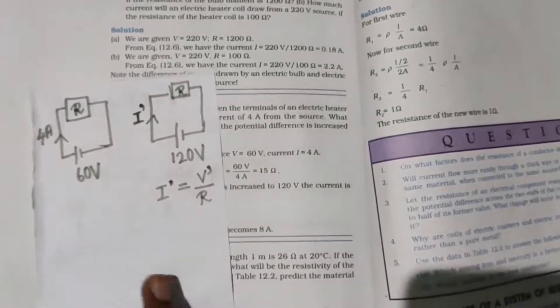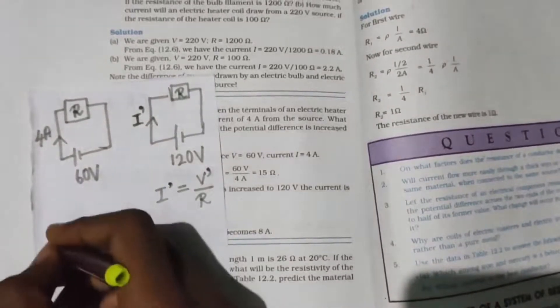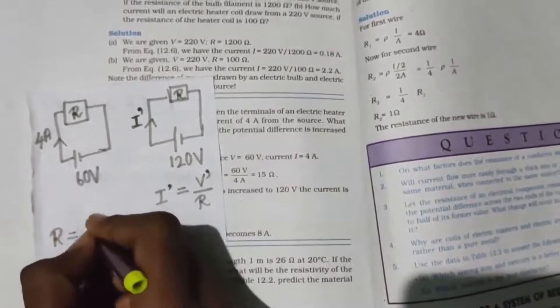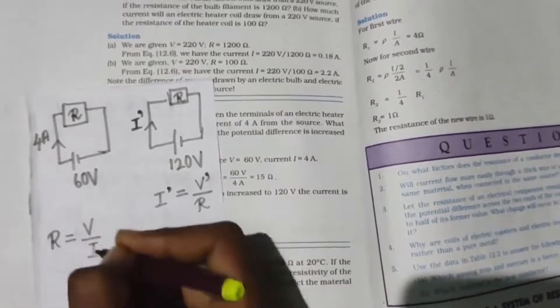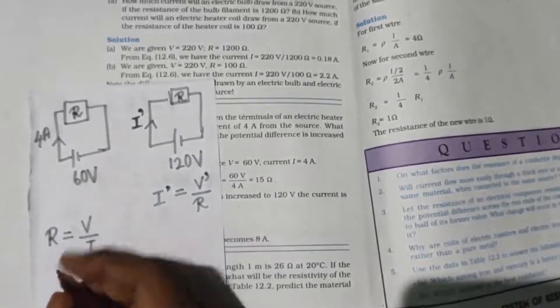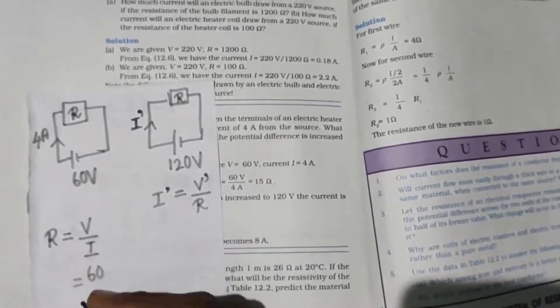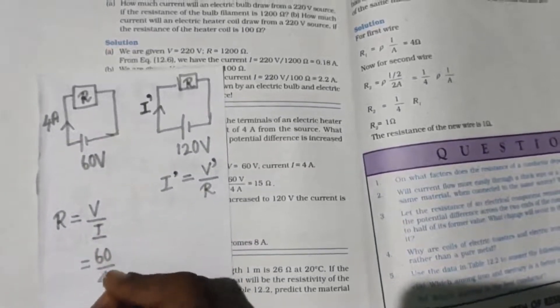R is equal to V by I. Using this, if you find the first case, then R value is 60 by 4, which equals 15 ohm. Am I right? So it is 15 ohm - very important.